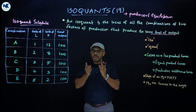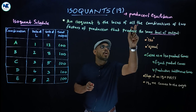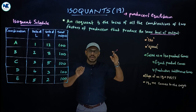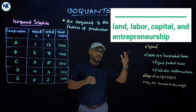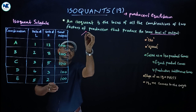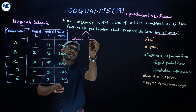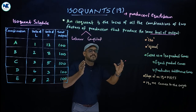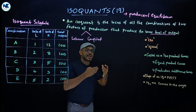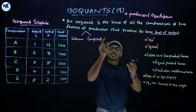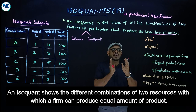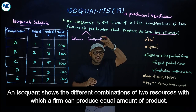An isoquant represents the locus of all combinations of two factors of production. We know there are four factors of production: land, labor, capital, and entrepreneurship. But here we will consider two factors of production — for example, labor and capital. These different combinations of labor and capital will give you the same level of output, or equal level of output.